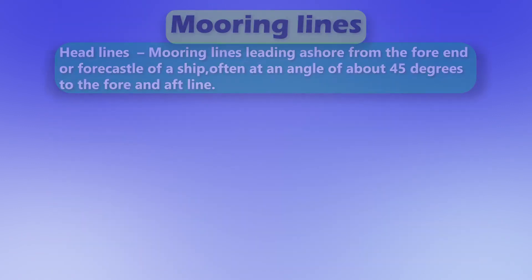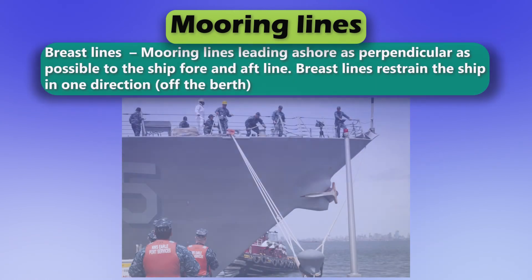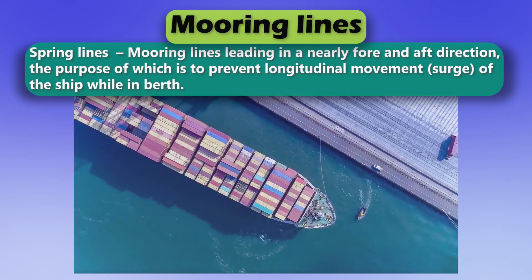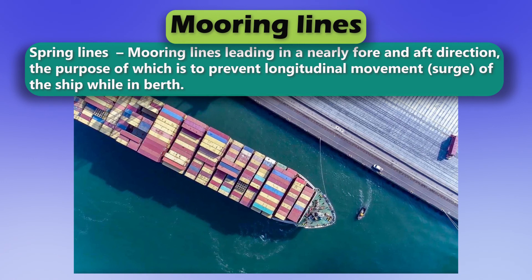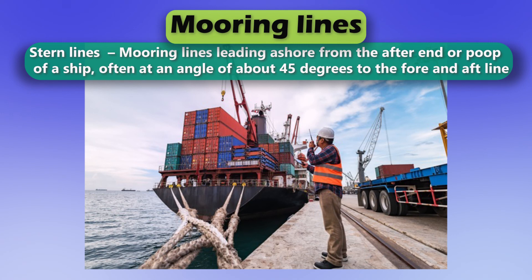Mooring lines — Headlines: mooring lines leading ashore from the fore end or forecastle of a ship, often at an angle of about 45 degrees to the fore and aft line. Breast lines: mooring lines leading ashore as perpendicular as possible to the ship's fore and aft line; breast lines restrain the ship in one direction, off the berth. Spring lines: mooring lines leading in a nearly fore and aft direction, the purpose of which is to prevent longitudinal movement, or surge, of the ship while in berth. Stern lines: mooring lines leading ashore from the after end or poop of a ship, often at an angle of about 45 degrees to the fore and aft line.